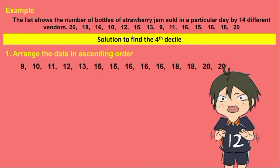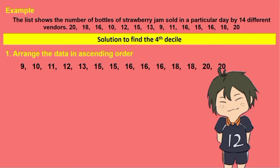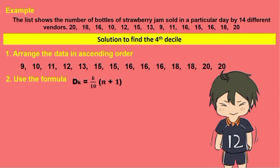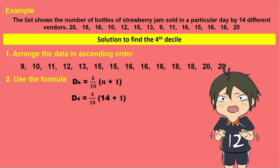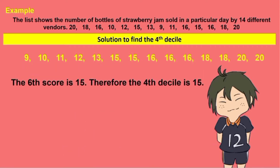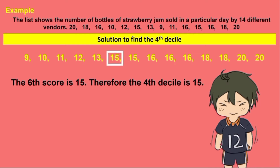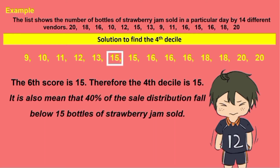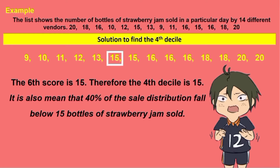For number 2, we will use the same order. Using the formula, substitute the given: 14 plus 1 is 15. Then let's multiply. After dividing, our 4th decile is the 6.0th score. The 6th score is 15. It also means that 40% of the sales distribution fall below 15 bottles of strawberry jam sold.